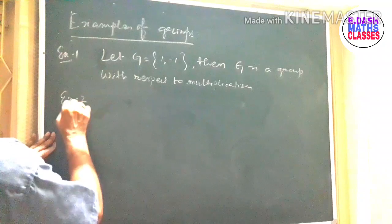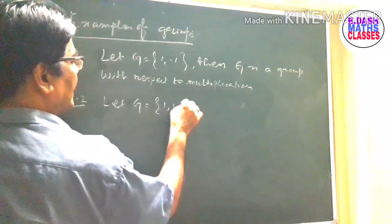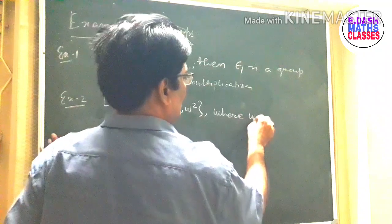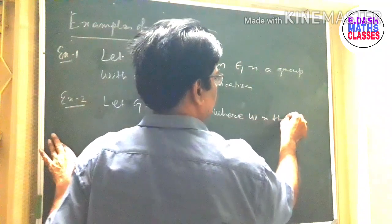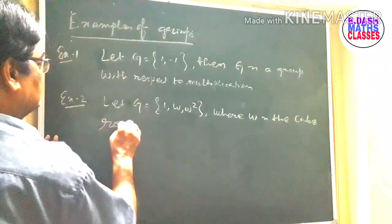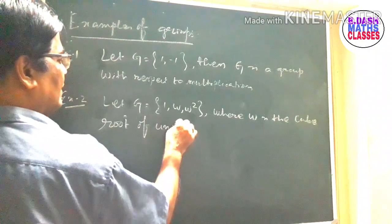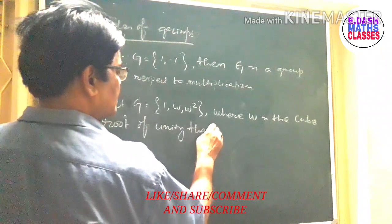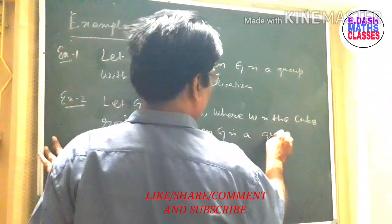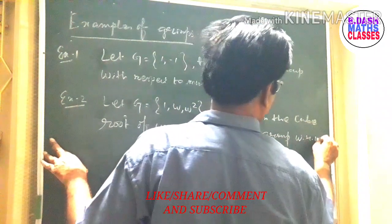Example 2: Let G = {1, ω, ω²}, where ω is the cube root of unity. Then G is a group with respect to multiplication.